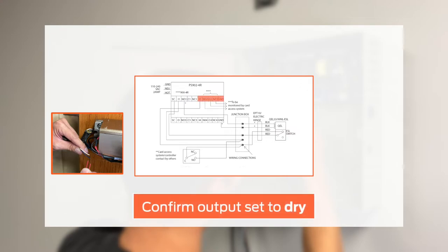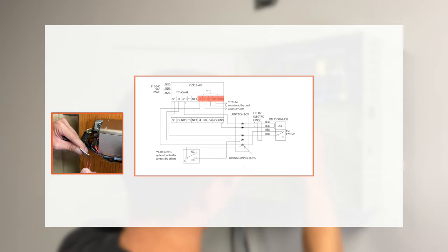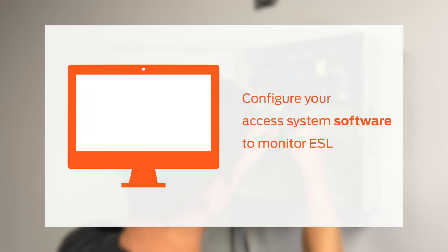Then confirm that the output on the option board is set to dry. See the 900-4R instructions for more information. Lastly, connect the relay output from the option board to the input of your access system. Please note, you may need to configure your access system software to monitor the ESL. See the access control system software or documentation for more information.